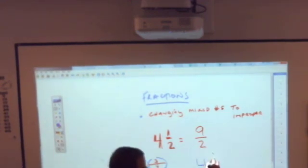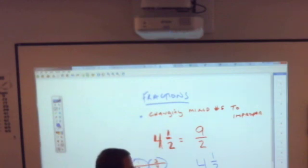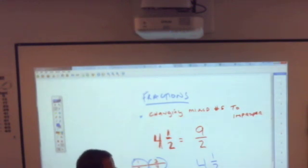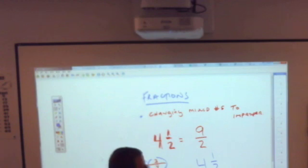Let's say I'm starting with 4 and 1 half. The first thing you do is multiply the whole number by your denominator. Multiply the whole number by the denominator, which means 4 times 2 equals 8.